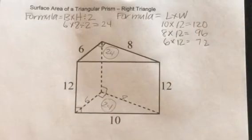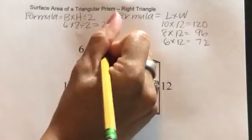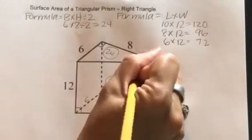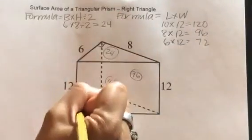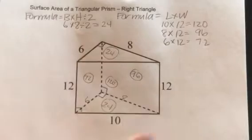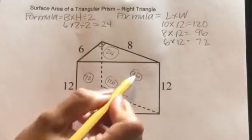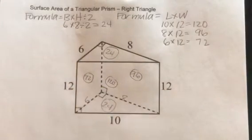Okay, so now I know that this front face is 120, this side face is 96, and then this face on this side is 72. So that's one, two, three, four, five. I've solved for five faces.